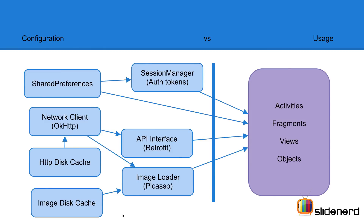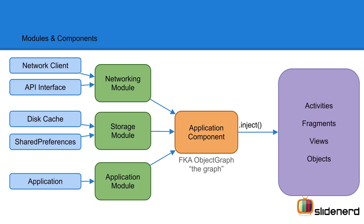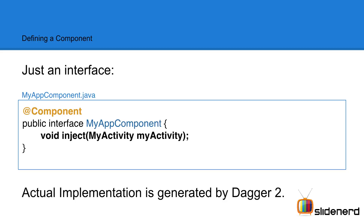Without using Dagger, everything looks chaotic — this needs this, this needs this, and so on. But with Dagger, you have a component with modules for everything: a networking module that provides the networking client and API interface, a storage module that provides shared preferences and database, and an application module that provides the application object — all linked up with the component. Finally, you call inject() to perform the injection in your activity, fragment, or wherever you need it.